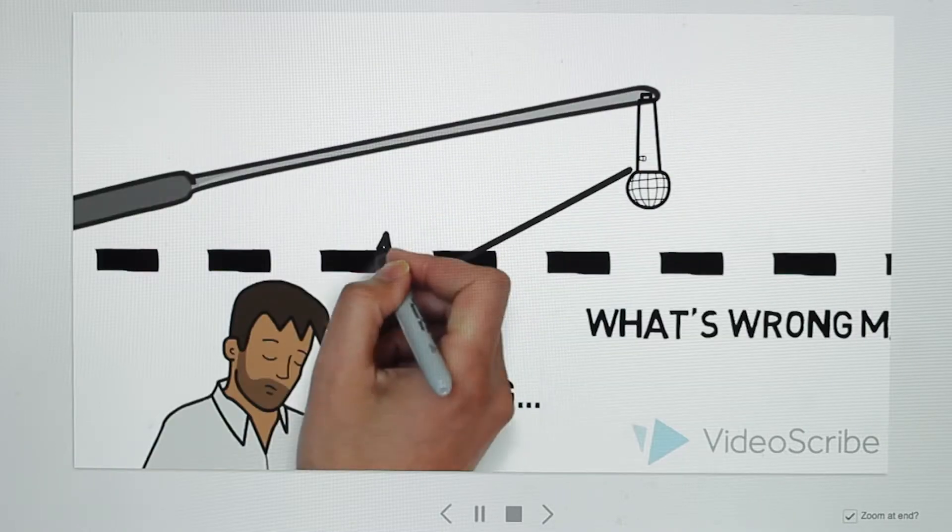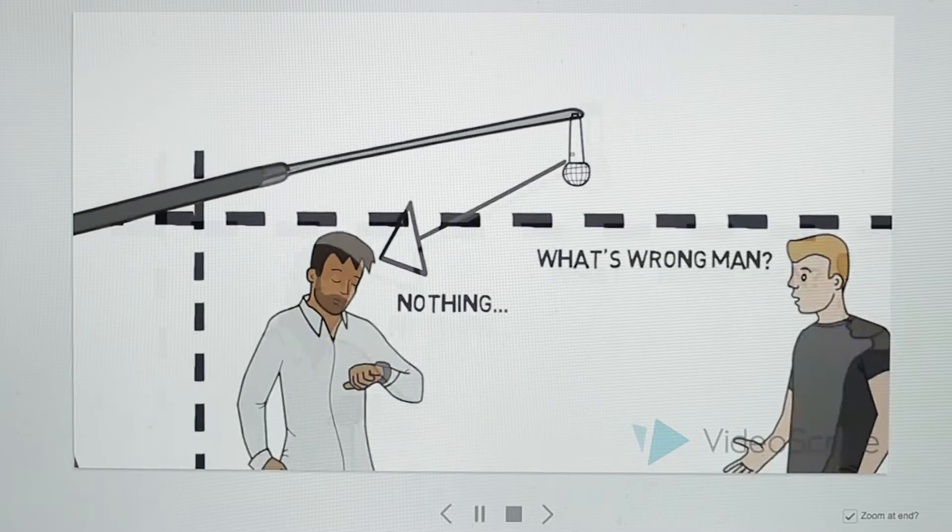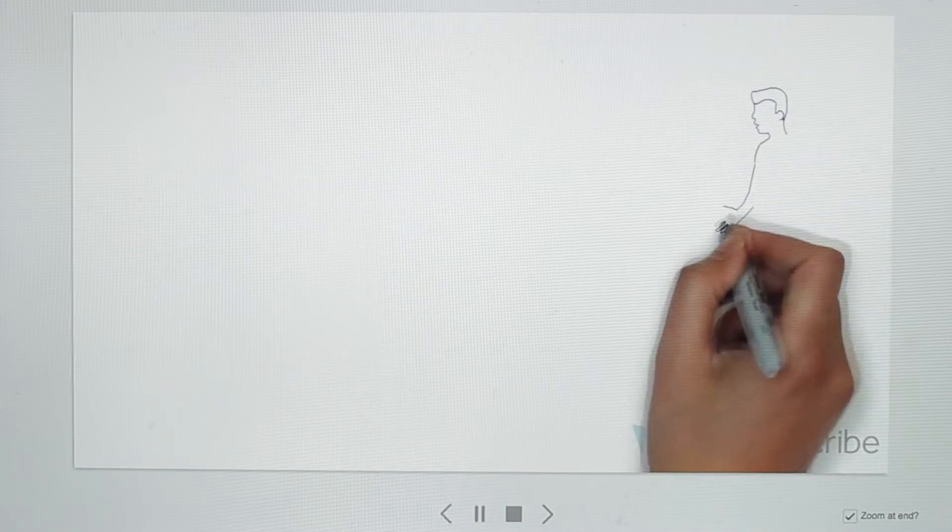This first example is a wide shot with the mic being placed right outside the frame, four feet away from our subject. We'll come back to that shot.